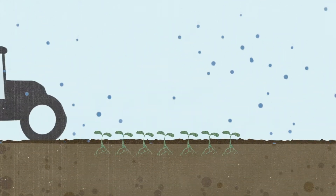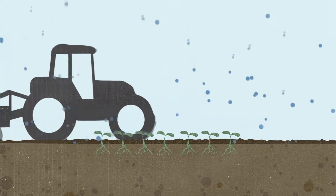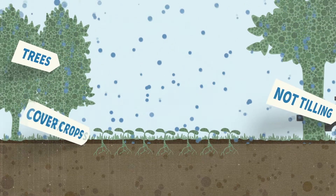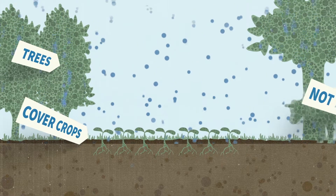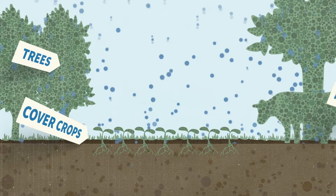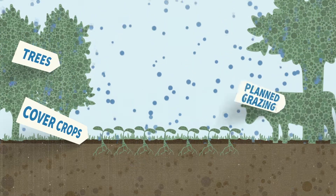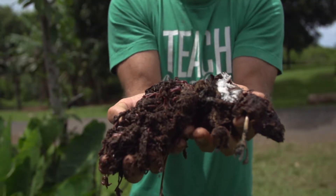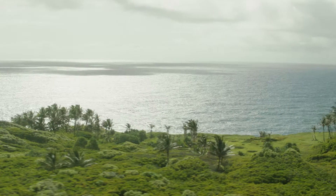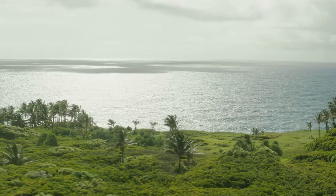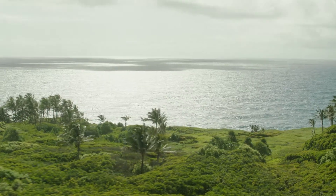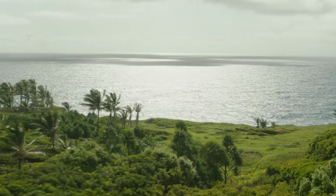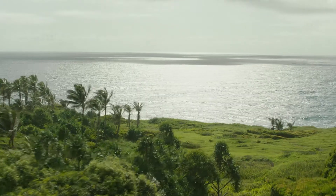Along with other regenerative practices like not tilling the soil, planting trees, cover crops, planned grazing, and nurturing mycorrhizal cultures and earthworms, we can build and retain gigatons of soil carbon. This is carbon farming. This is regenerative agriculture.